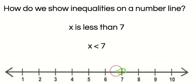And then we draw an arrow to the left with an arrow at the end there, showing that it can be any number less than 7.